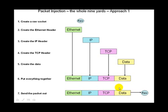Summarizing approach one: we first create the raw socket, then we create each of the headers separately in memory — Ethernet, IP, TCP, and then data (this could also be UDP). Then we concatenate all these headers one after the other in order — Ethernet, then IP, then TCP, then data — and finally send this packet out onto the network.